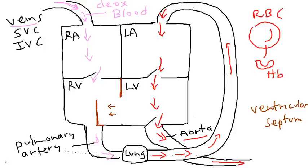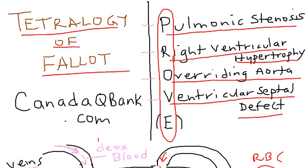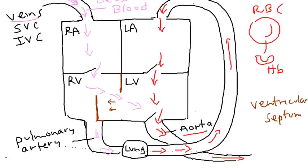Immediately, do you notice there's a gap? This gap is basically the ventricular septal defect — VSD. Ventricular septal defect: there's a defect in the ventricular septum. That's easy to understand.